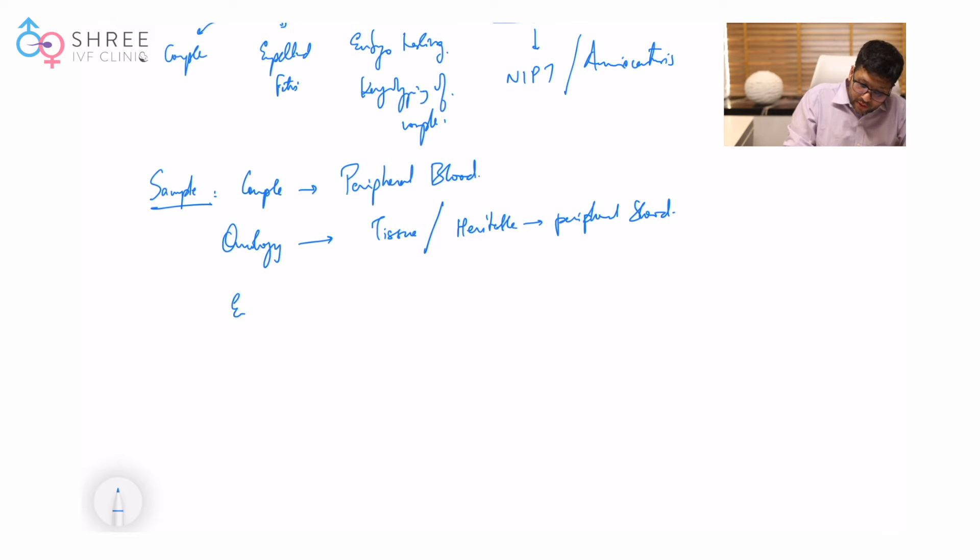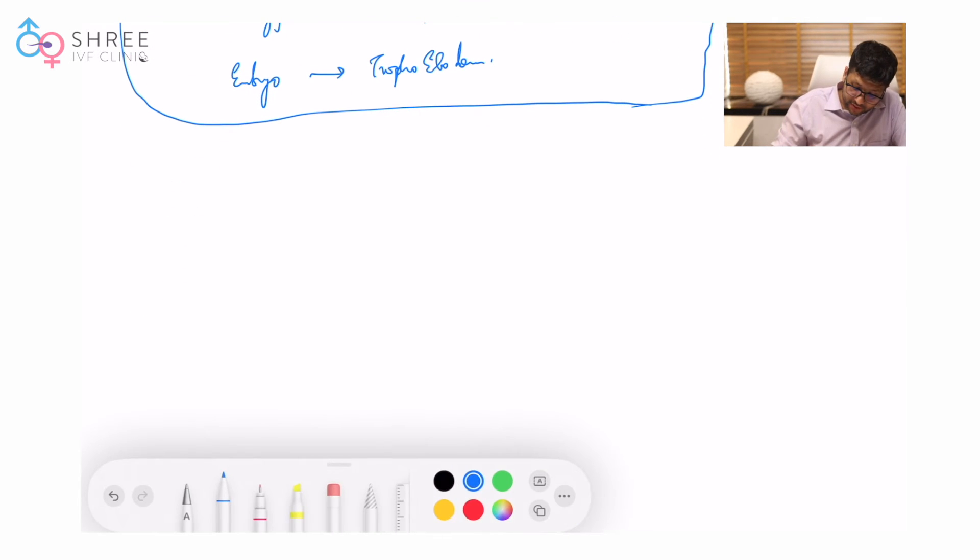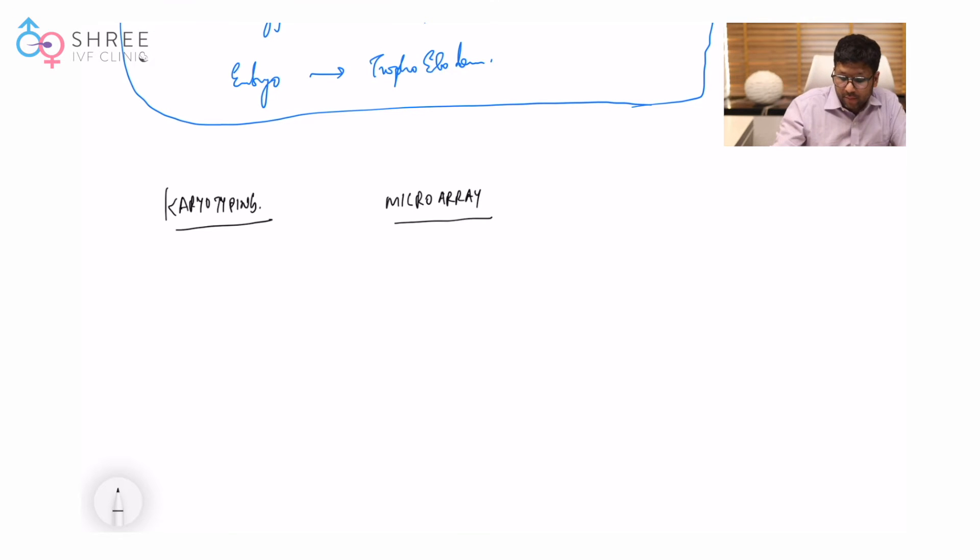When we look at fertility and embryo, it is not peripheral blood, it is actually trophectoderm. So let me break up these tests. The first thing is karyotyping, then microarray, after that exome sequencing, and finally genome sequencing - also called whole exome sequencing or whole genome sequencing.